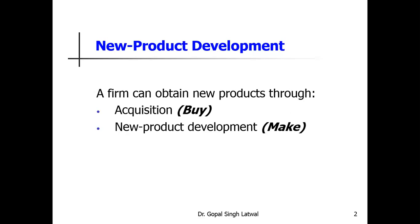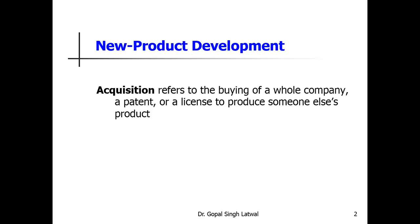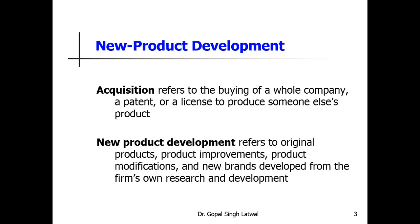An example of a new product is the mobile phone when it first came to the world. There may also be modified new products — the phones we see nowadays with new features and add-ons. Acquisition refers to the buying of a whole company, a patent, or a license to produce someone else's product. New product development refers to original products, product improvement, product modification, or a new brand developed from the firm's own research and development.